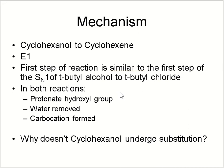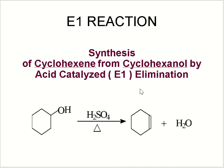Let's talk about the mechanism. We already performed the SN1 nucleophilic substitution reaction of tertiary butyl alcohol to tertiary butyl chloride. The first step of this reaction is similar, but the second step is a little bit different. In both reactions, the protonated hydroxyl group leaves as water and a carbocation is formed. The key question is: why does cyclohexanol give elimination rather than substitution? It's basically because of carbocation stability — the stability of the carbocation drives the elimination reaction.